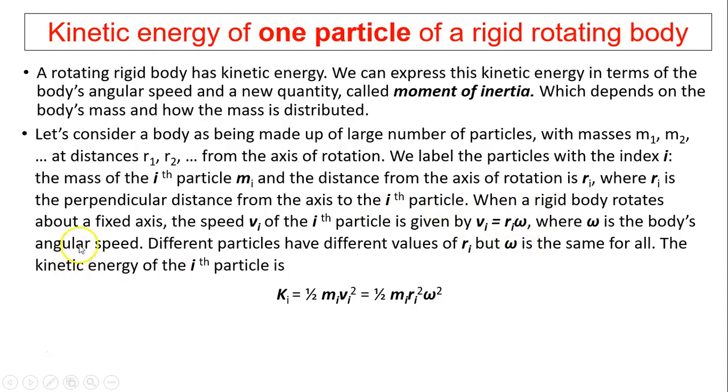When the rigid body rotates about a fixed axis, the speed vi of the i-th particle is given by vi equals ri times omega. Omega is the body's angular speed. Different particles have different values of ri, but omega is the same for all of them. The kinetic energy of the i-th particle is 1/2 mi vi squared. Vi equals ri times omega, so that equals 1/2 mi ri squared times omega squared. That's the kinetic energy of one particle.